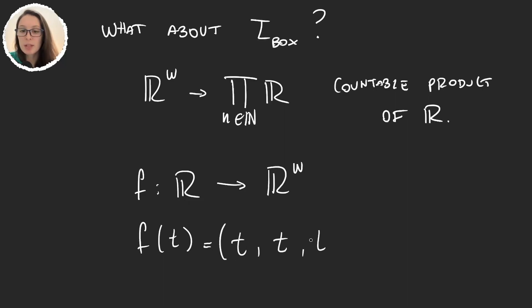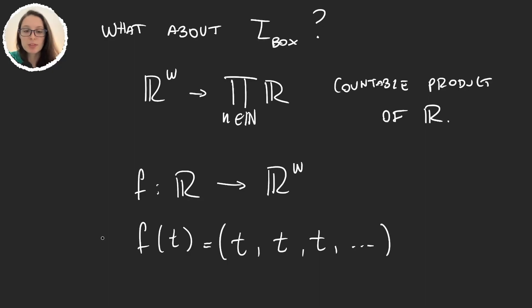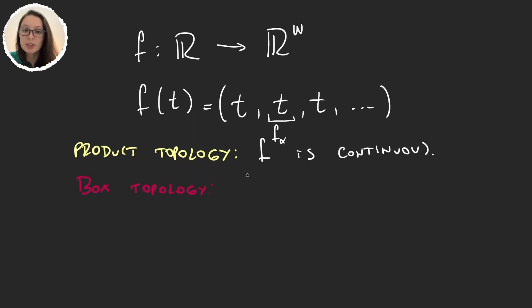If this function in the product topology, the identity function from the real numbers onto the real numbers with the standard topology is continuous. And so f is continuous. And what about the box topology? Well, we will prove that f is not continuous.